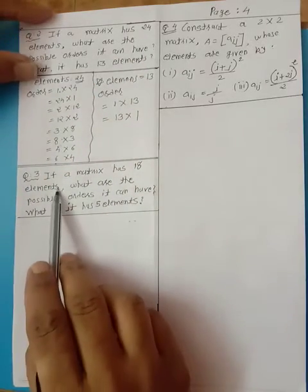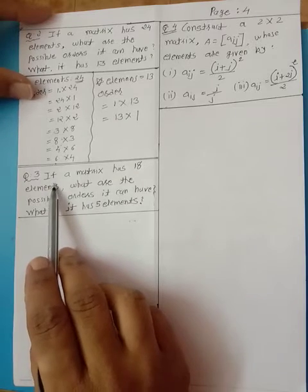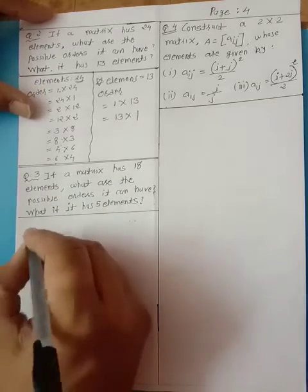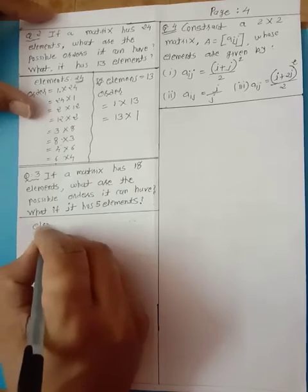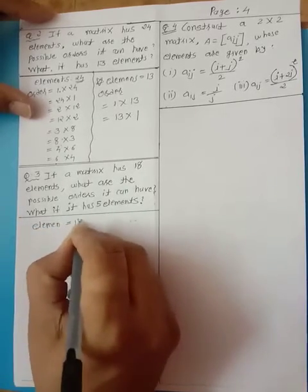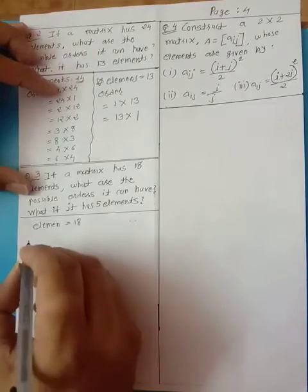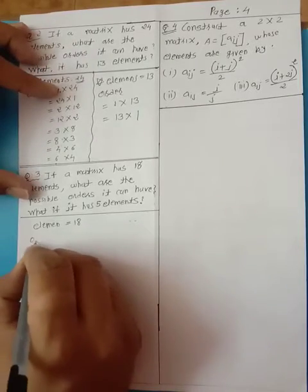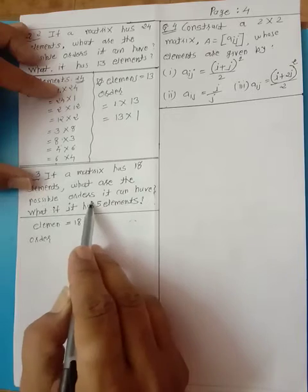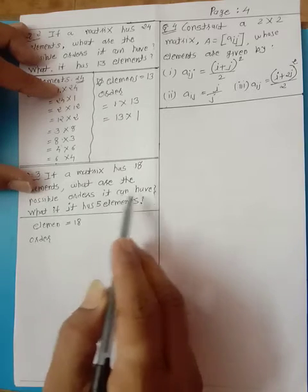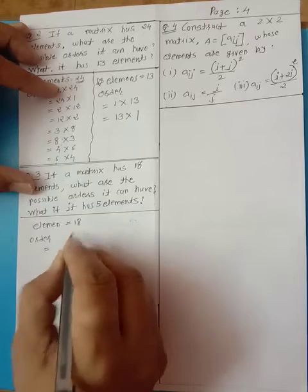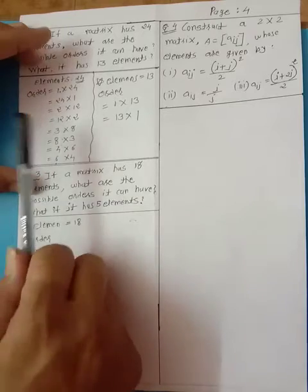Now there is a third question: if a matrix has 18 elements — element is 18 — then how many orders will be formed? What are the possible orders it can have? Write it the same way as above.